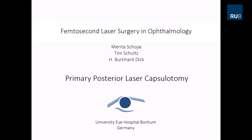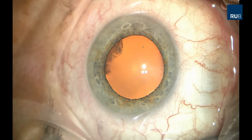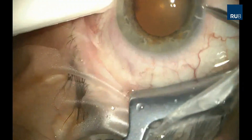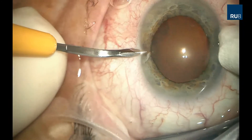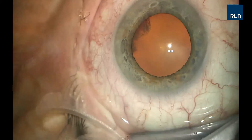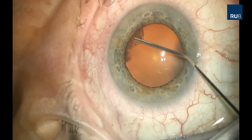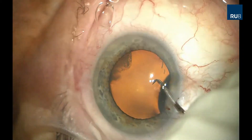First, routine manual or laser assisted cataract surgery is performed. Paracenteses are made at the three and nine o'clock position. Next, the anterior chamber is filled with OVD and an anterior capsulorhexis is performed.